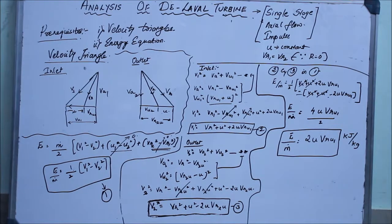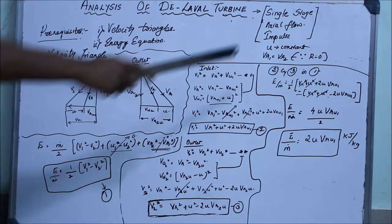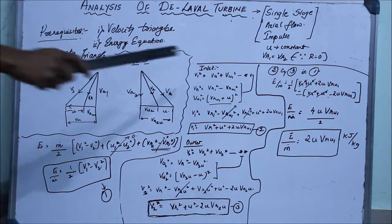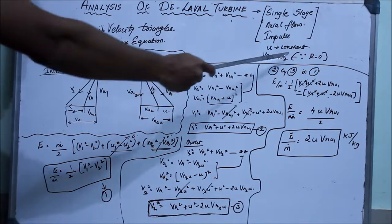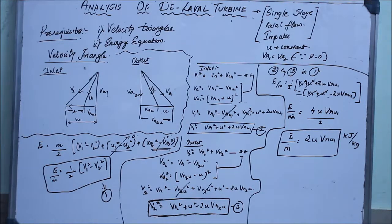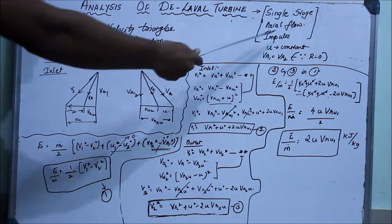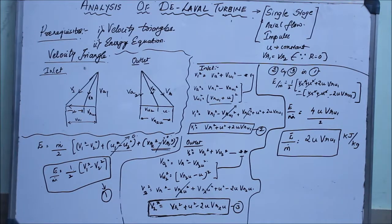In this, I will be analyzing the D-level turbine. The D-level turbine is a single stage, axial flow, impulse turbine. Since it is an impulse turbine, the degree of reaction is zero, and hence Vr1 is equal to Vr2 — the relative velocities are the same. And since it is an axial flow turbine, the blade speed U is also constant, so U1 equals U2. Remember those two points whenever you deal with an impulse axial flow turbine.